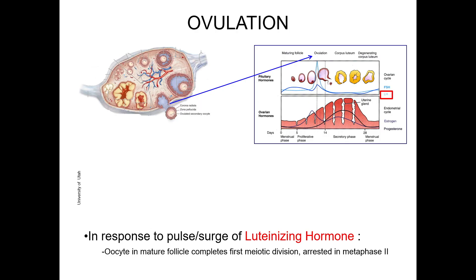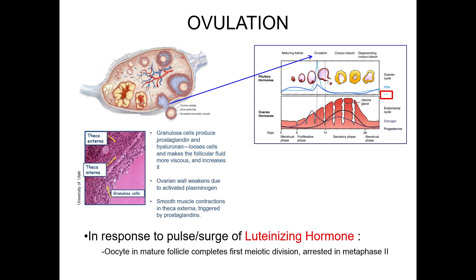The LH surge has multiple effects on the follicle. The dominant oocyte undergoes the first meiotic division and arrests in metaphase 2. The granulosa cells produce prostaglandins and hyaluronin, loosening the cells and making the follicular fluid more viscous. Prostaglandins stimulate smooth muscle contractions of the theca externa, while the ovarian wall becomes weakened by plasminogen. These events combine to cause the follicle to rupture and release the ovum with the corona radiata into the peritoneal cavity.